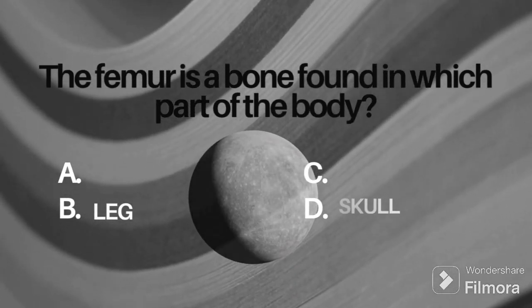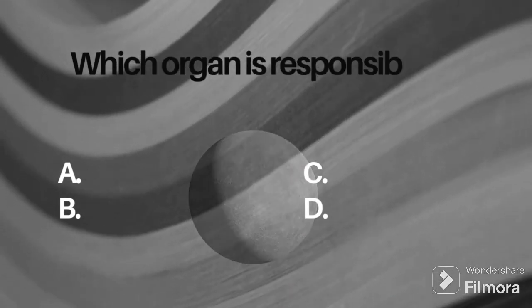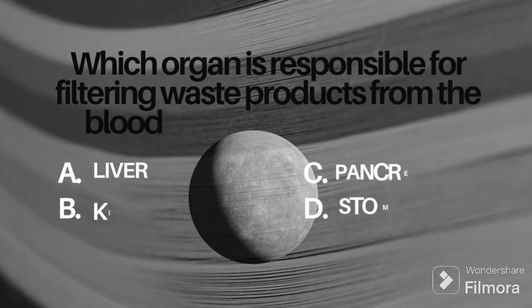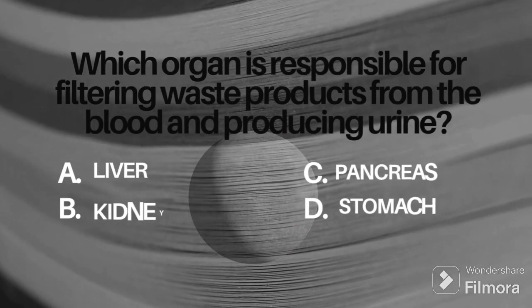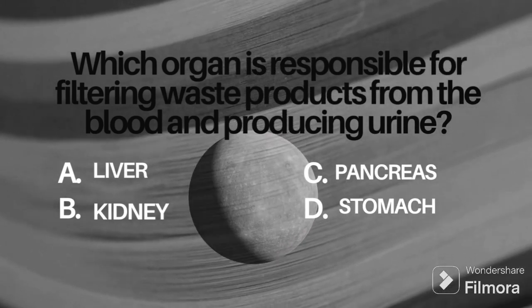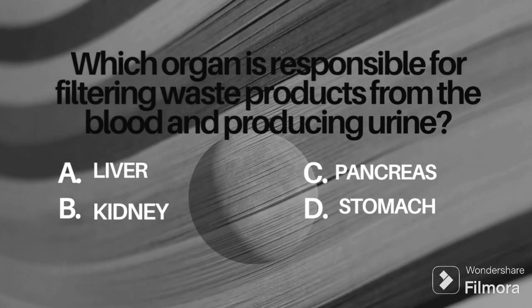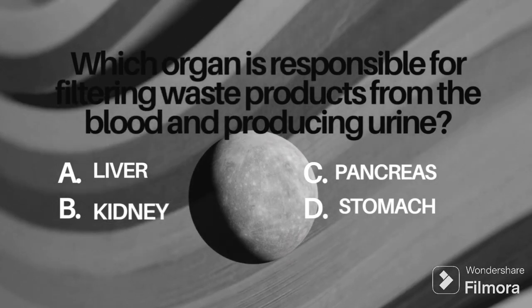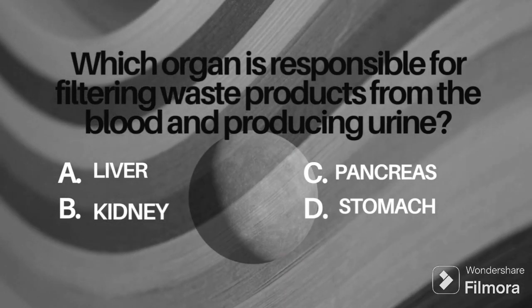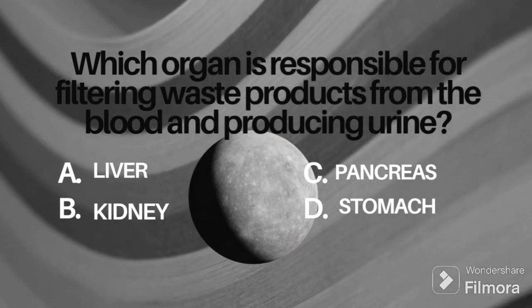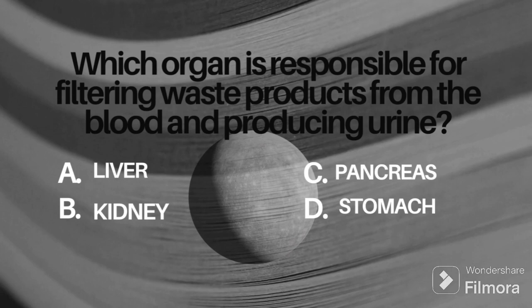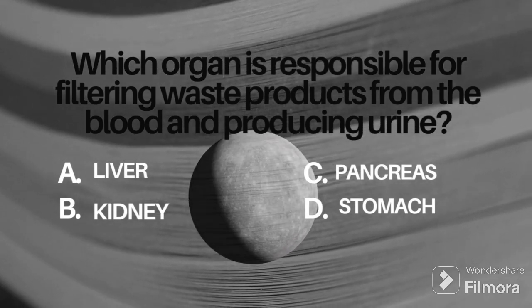The third question is: which organ is responsible for filtering waste products from the blood and producing urine? Option A: liver, B: kidney, C: pancreas, D: stomach. Please give your right answer in the comment box.